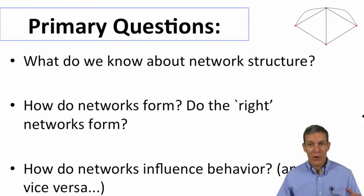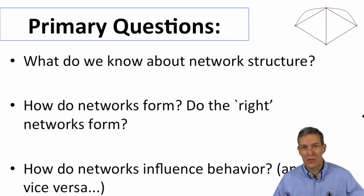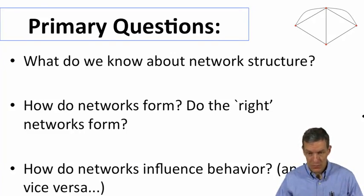The primary questions we're going to be interested in in this course: we'll start with some background on structure of social networks, what we know about social networks. Most of the course will be looking at how networks form—do the right ones form? If we could actually affect network formation from different perspectives, would we want to? How do networks influence behavior? What's that relationship between how dense a network is and what the outcomes are?